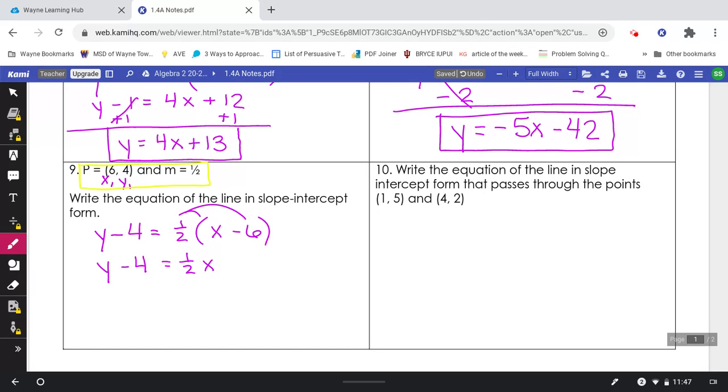One half times x is just one half x, and then we multiply one half times 6, you get a 3. You can also think about it as just what is half of 6. We all know half of 6 is 3, so we're going to bring that down as minus 3. Add 4 to both sides, getting us a final answer of y equals 1 half x plus 1.